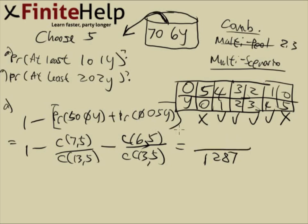And then on the top, let me change the one to 1287 over 1287. And we're going to subtract these two. Seven choose five is going to be 21. Six choose five is going to be six. This comes to 27. So here's going to be 1250 over 1287.